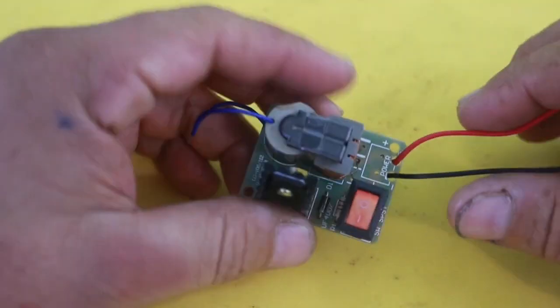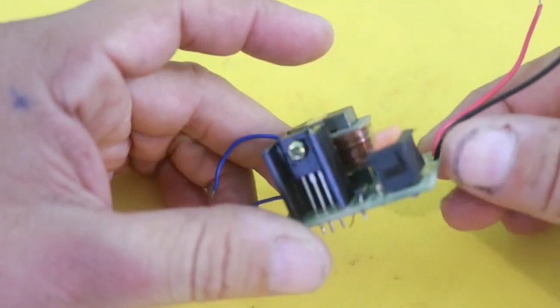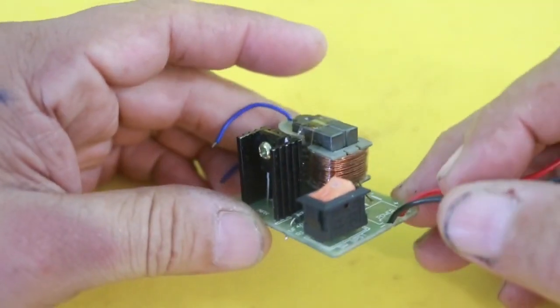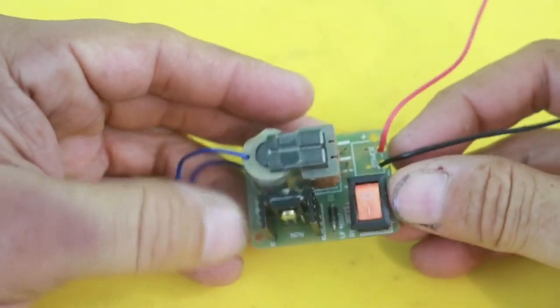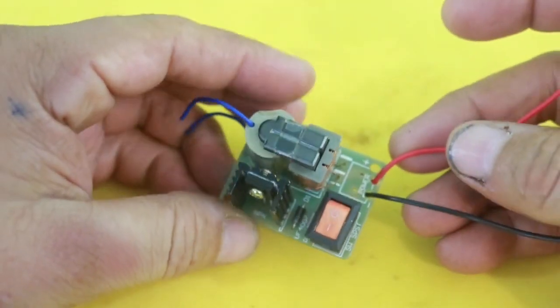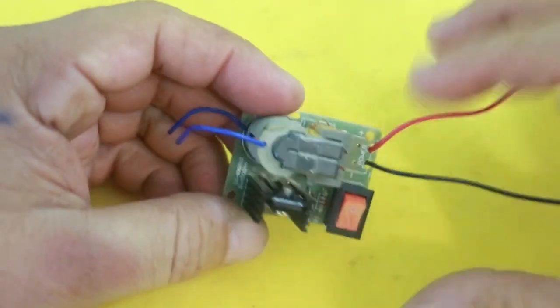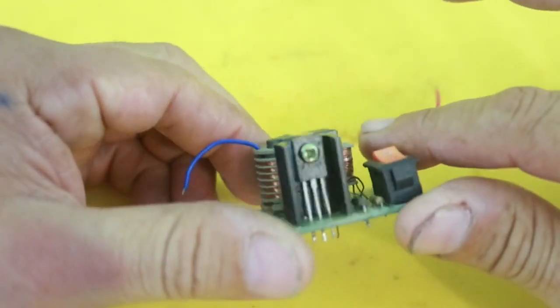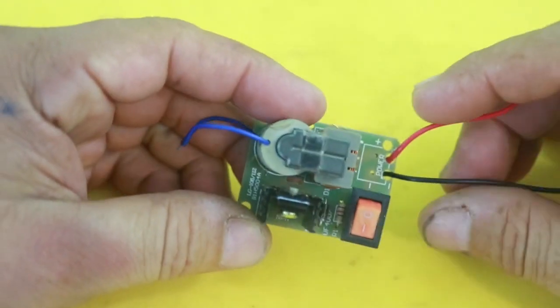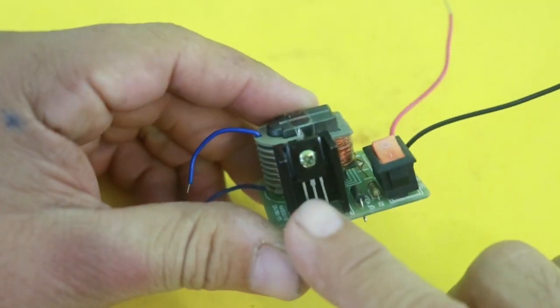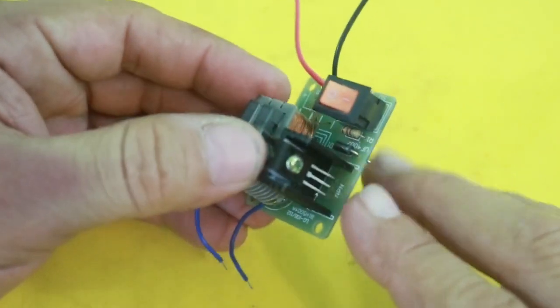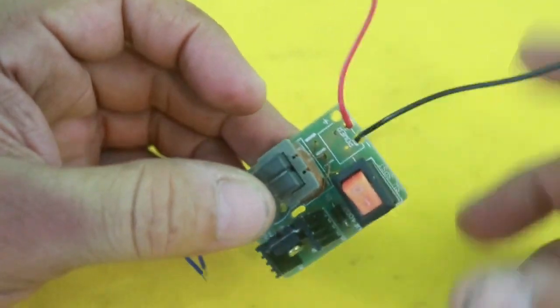Some time ago I uploaded a video on this miniature high voltage power supply. This little power supply produces around 10 to 15 thousand volts and has a very simple driver circuit. It only consists of a transistor and a few more components, a diode and a resistor.